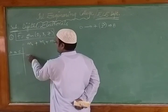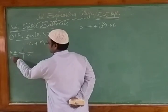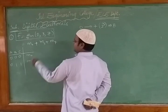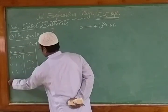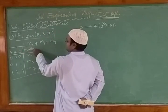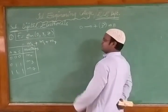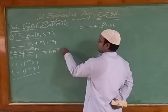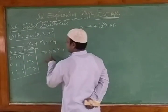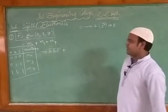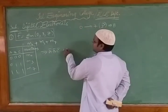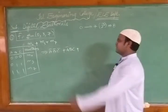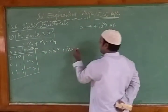For minterm m0, we write 0 0 0, which gives ā b̄ c̄ because all bits are zero, meaning all variables are complemented. For m3, we write 0 1 1, giving ā b c. For m7, all bits are 1, so m7 = a b c. These are our three minterm values that we need to convert into Boolean expressions.